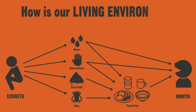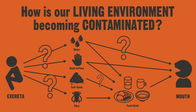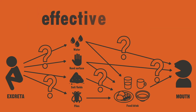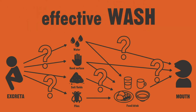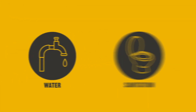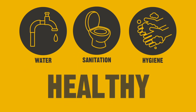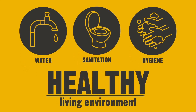How is our living environment becoming contaminated? How is fecal matter being spread? How are we being exposed? If we have these answers, we can come up with effective WASH measures for preventing diarrhea. By examining how your feces can affect your community and creating an effective WASH measure, let us reduce cases of diarrhea and build a healthy living environment.